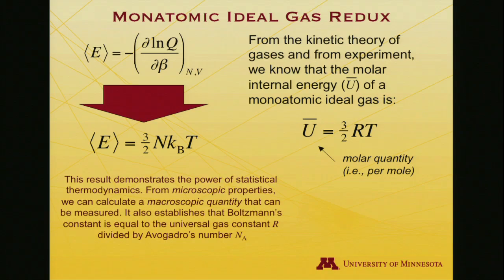This result demonstrates the power of statistical thermodynamics, because I used microscopic properties to compute a macroscopic property. Evidently this expectation value of the energy is equal to the internal energy. If it's the molar internal energy, I must have a mole—this capital N is Avogadro's number of atoms. And remember, I told you that Boltzmann's constant times Avogadro's number is the universal gas constant. In a way, you can think of this as being how you determine Boltzmann's constant. We didn't have to determine it previously. We could have just gone through this to predict the energy, compared it to what's known from other kinds of measurements, and assessed what Boltzmann's constant must be.